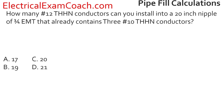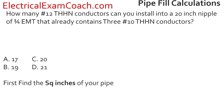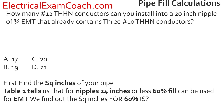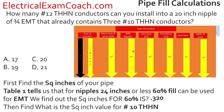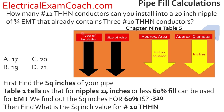Practice question: How many number 12 THHN conductors can you install into a 20-inch nipple of EMT that already contains three number 10 THHN conductors? Because this is a nipple of 24 inches or less, we use the 60% fill column. Head to Chapter 9 Table 4 for EMT, verify the conduit, find 3/4-inch, cross to the 60% fill column: 0.320 square inches. Then head to Chapter 9 Table 5, verify it's Table 5 not 5A, find THHN and size number 10: approximate area is 0.0211 square inches.